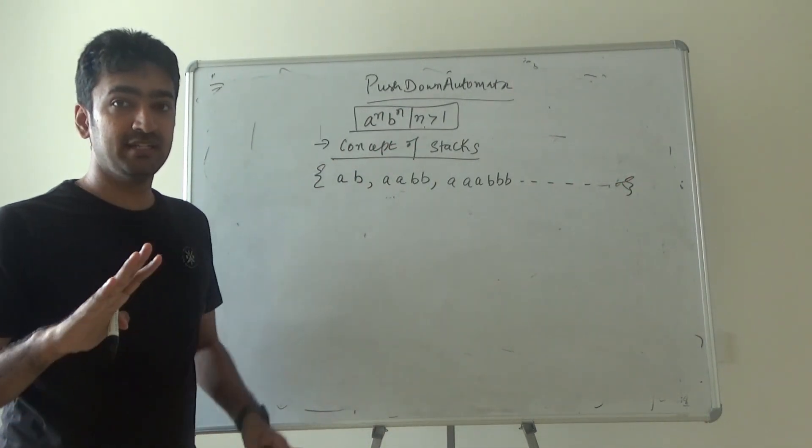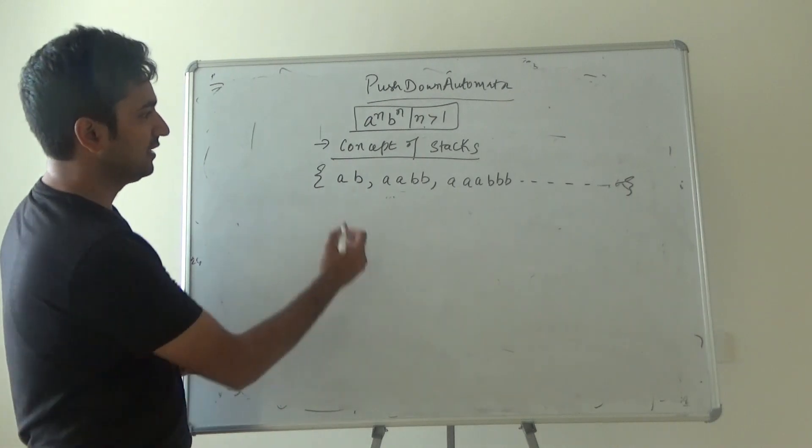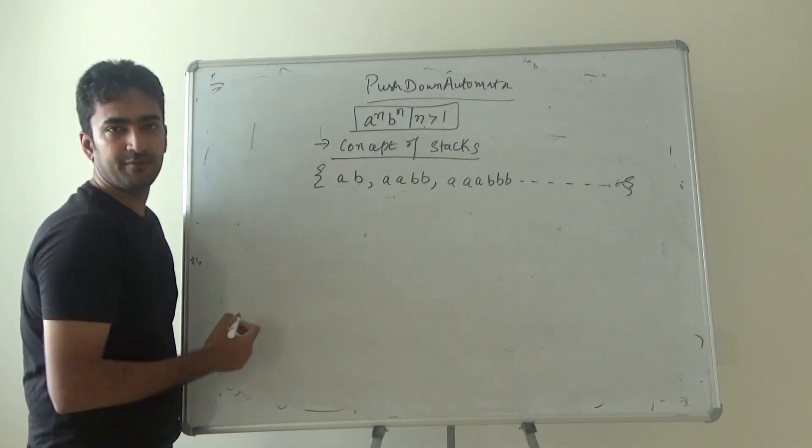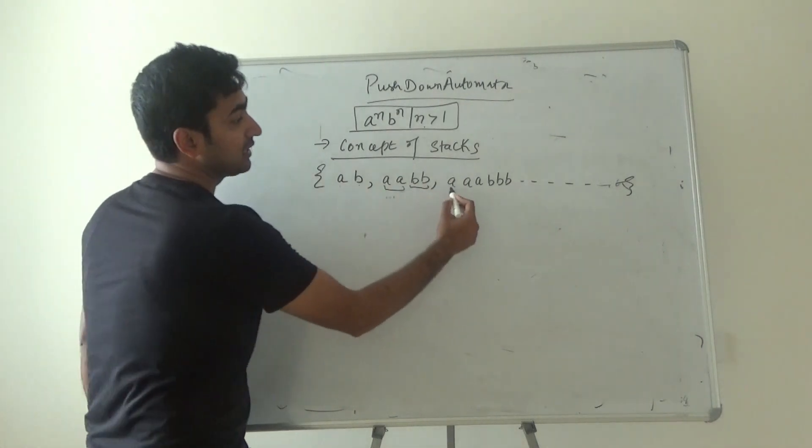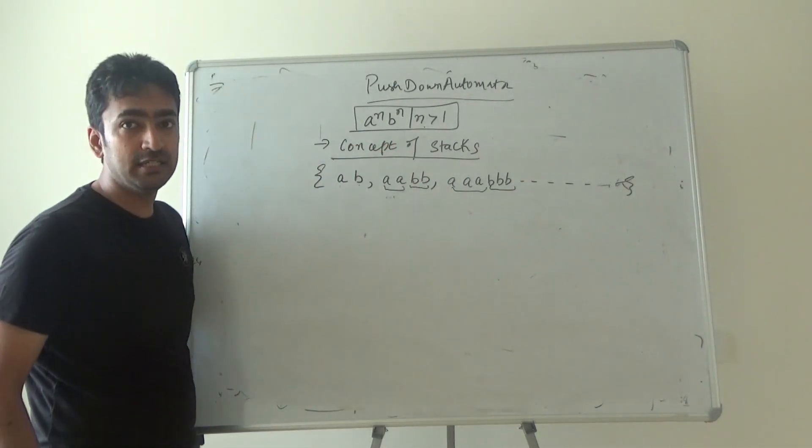Try to understand the concept. The concept says if there is 1 a, then there is 1 b. If there are 2 a's, then there are 2 b's. If there are 3 a's, then there are 3 b's.